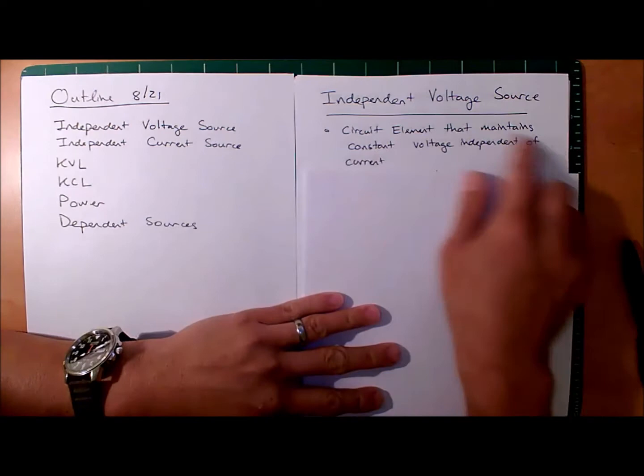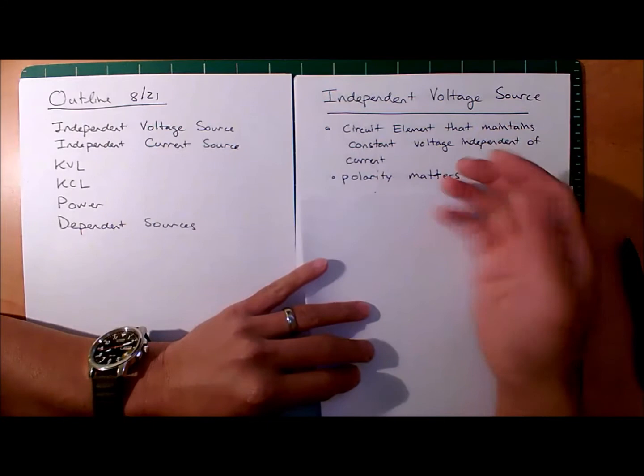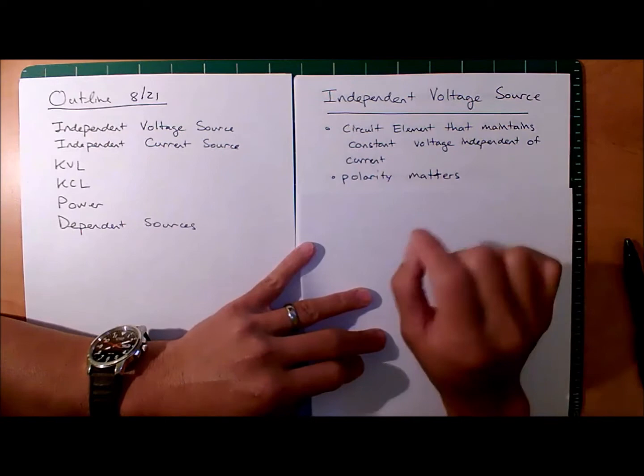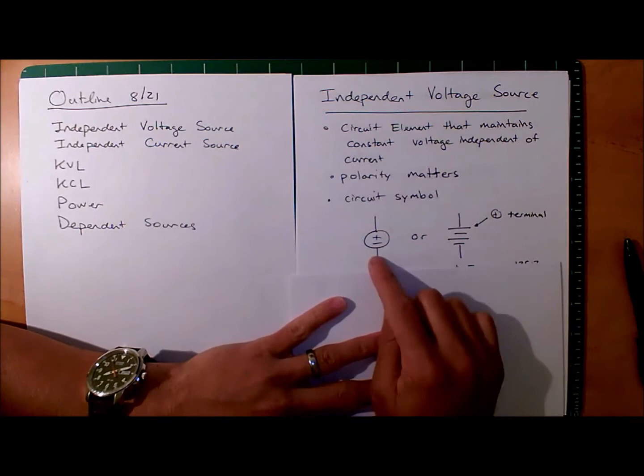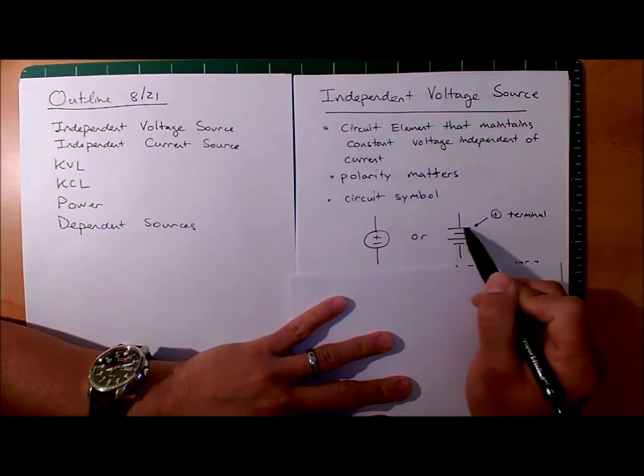The formal definition: it's a circuit element that maintains a constant voltage independent of current. We have to make sure, just like when you're assigning a voltage reference, that the polarity matters — you've got to get that plus and minus correct. The circuit symbol you might come across looks like a circle with a plus or minus, or these long and short lines. The long line represents the positive terminal, and either one represents an independent voltage source.